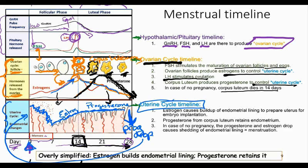The uterine lining stays pretty stable after ovulation as estrogen levels are no longer increasing. The endometrial lining sticks around because we have progesterone on board — estrogen is building it, progesterone is maintaining it. If progesterone drops, the next month you shed that lining. So in the case of no pregnancy, estrogen causes a buildup of the lining, progesterone retains it, and when they both drop, it's the progesterone drop that causes the shedding of the lining.